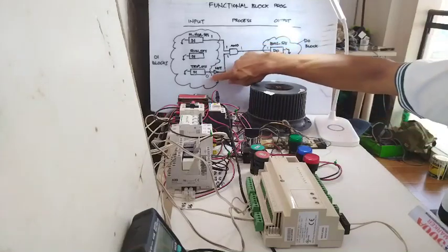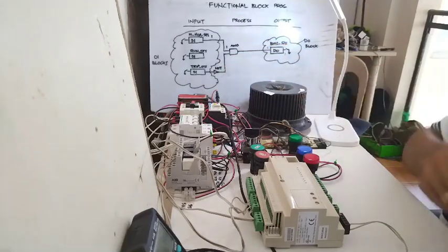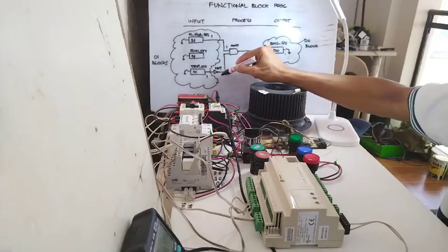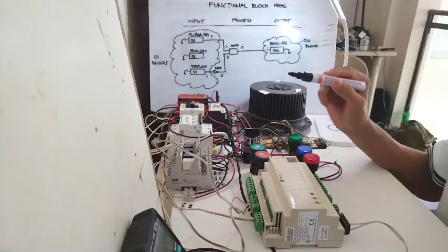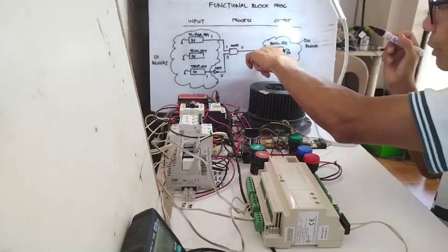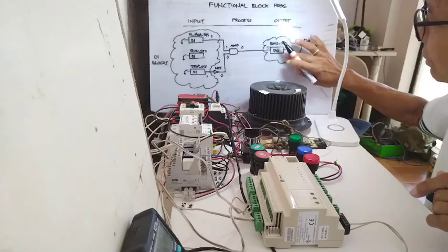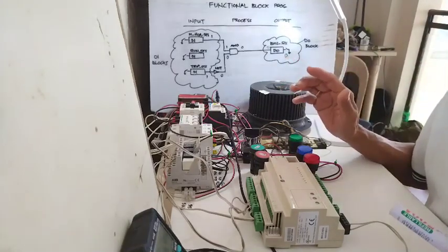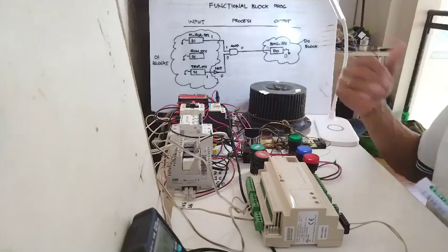Now let's trace what happens if it trips. Assuming it is running and then it trips — this trip signal becomes 1 because it tripped and the contact closes. Then the NOT gate output becomes 0. Then the AND gate output becomes 0, because both inputs must be 1 for a 1 output. So the output is 0, and our BMS releases the command to the control panel.